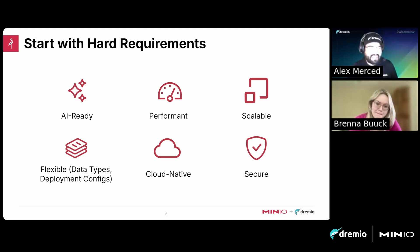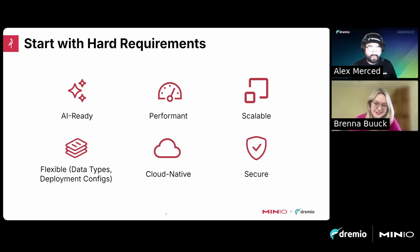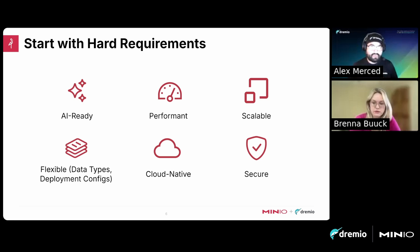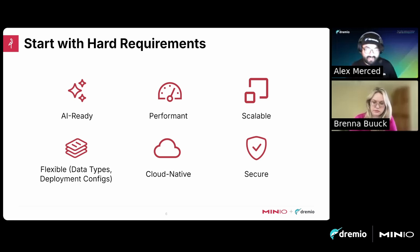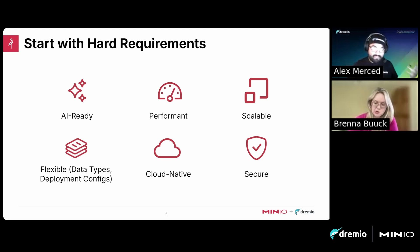Whenever you're trying to discover a solution, start backwards — figure out what experience and end results you need, then work from there. Key hard requirements include building a data platform that is AI-ready, able to deliver data performantly for AI model training and deployment. It needs to be scalable — as you have more data you want to store it, and query petabyte-sized data sets. You need flexibility to work with different types of data located in different places.